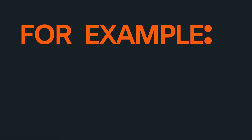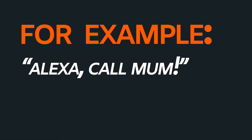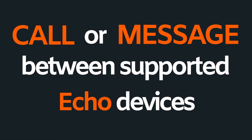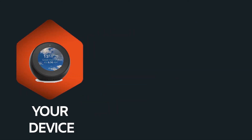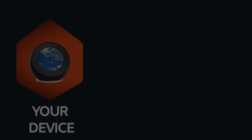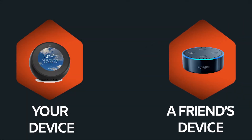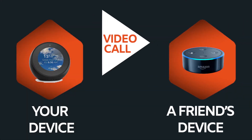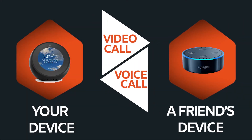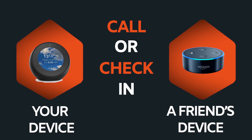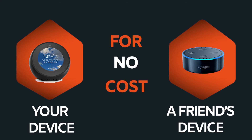For example, you can say 'Alexa, call Mom' — it's that simple. You can call and message between supported Echo devices, which means that if you have one of the Alexa devices at home and a family member or friend has one, you'll be able to video call or voice call each other. You can call or check in on your loved ones for no cost.